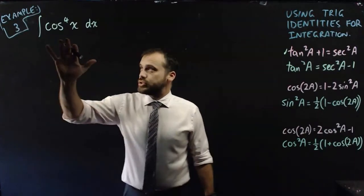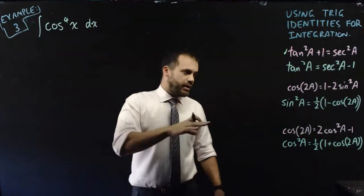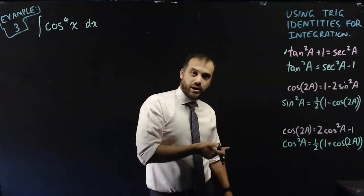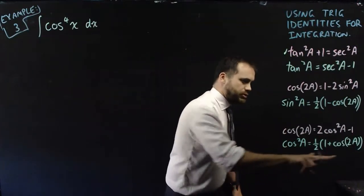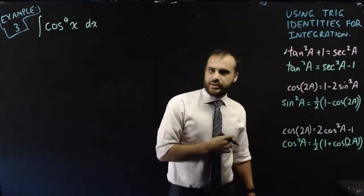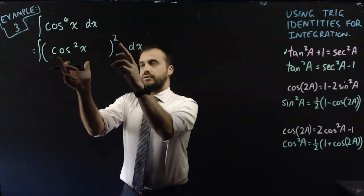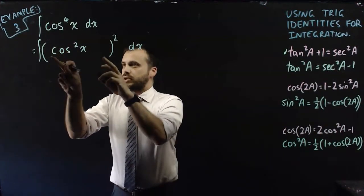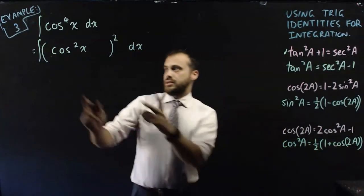So we've integrated tan²x and it is tan x minus x plus C. So example three here, and this time we're raising cos x to the power of four. We're going to have to pass through one of these identities and we're going to have to pass through it twice. So if we're looking at cos⁴x, we can rewrite it using this identity here.